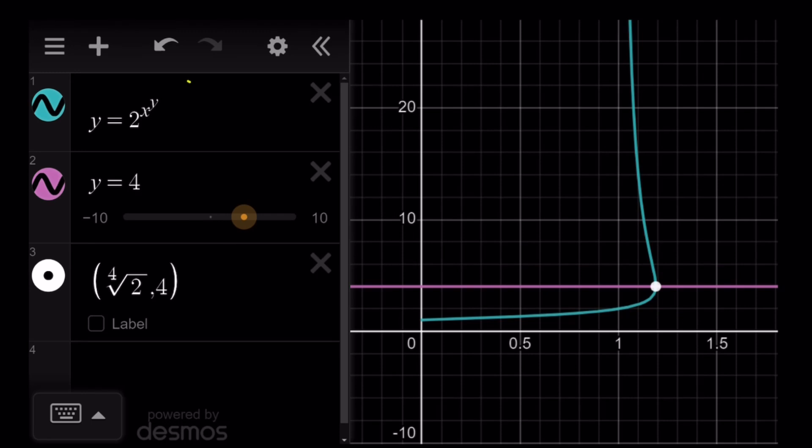If you do the whole thing as a relation, which is - remember we talked about this, right? - y equals 2 to the power x to the power y, then you'll get exactly the exact intersection point, which is the fourth root of 2, comma 4.